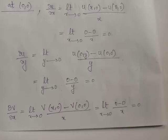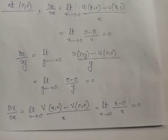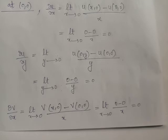To evaluate ∂u/∂y, we treat x as constant at x = 0. By the limiting definition, ∂u/∂y = limit as y tends to 0 of [u(0,y) minus u(0,0)] divided by y. Substituting x = 0 and y = y in the function gives u(0,y) = 0. So ∂u/∂y = limit as y tends to 0 of (0 minus 0) divided by y, which equals 0.